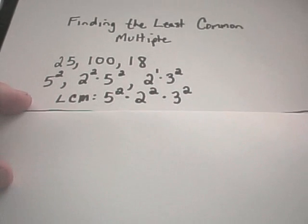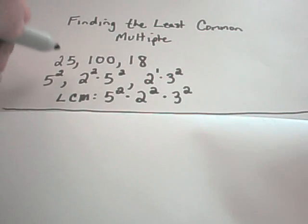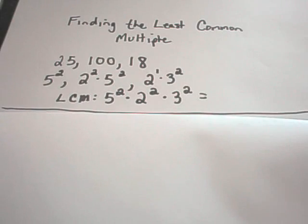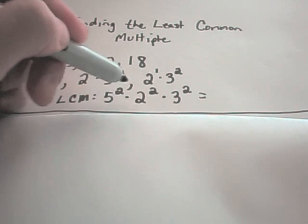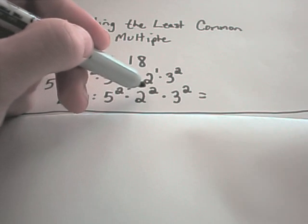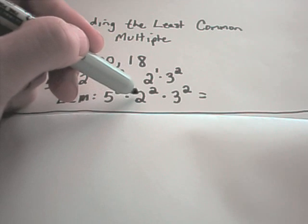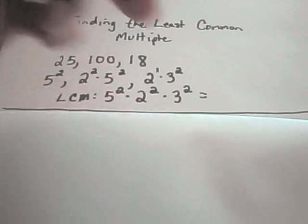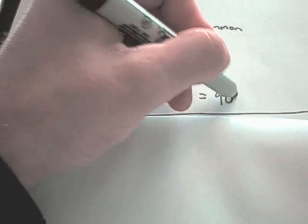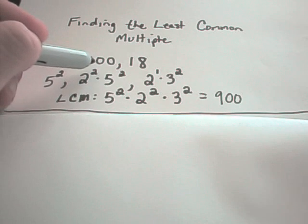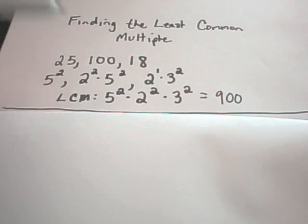And that is going to be my least common multiple of 25, 100, and 18. And if you needed to, you could multiply these back out. You would get 5 times 5 is 25, 2 times 2 is 4, 3 times 3 is 9. So 25 times 4 is 100, 100 times 9 would be 900. That's the smallest number that 25, 100, and 18 will all divide into evenly.